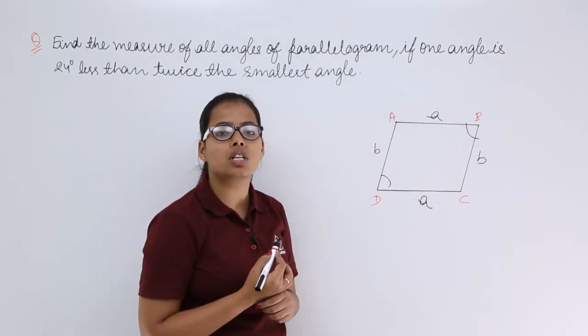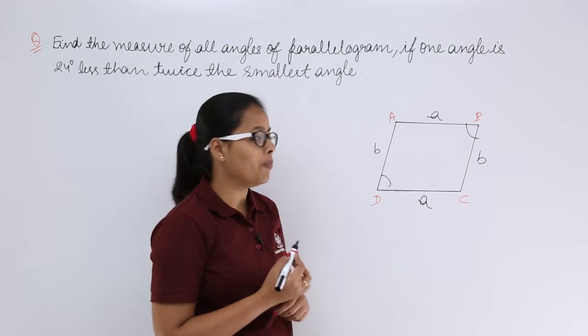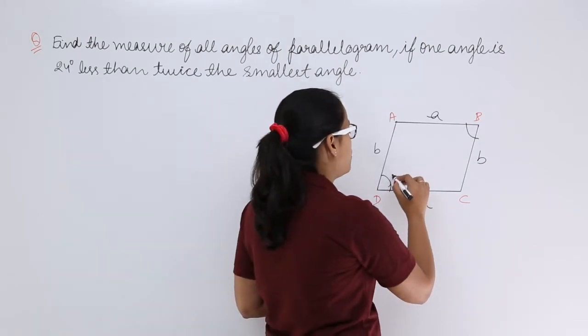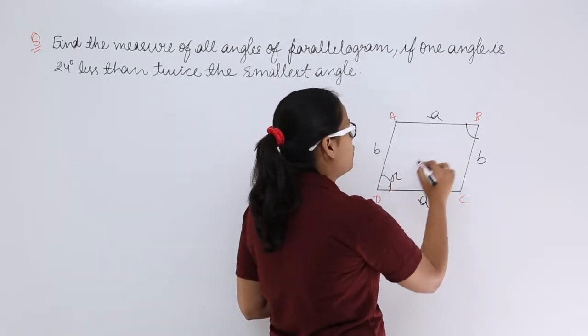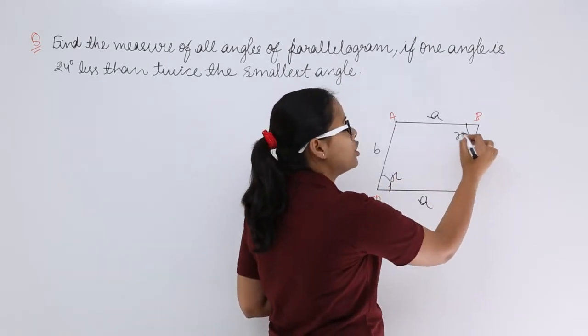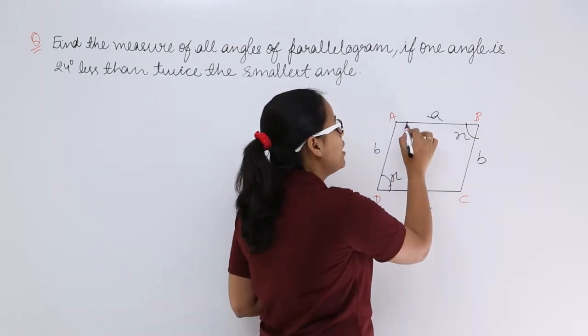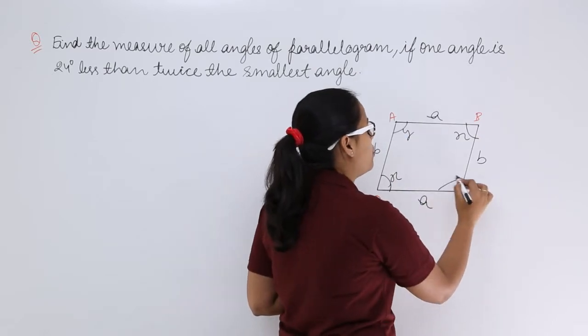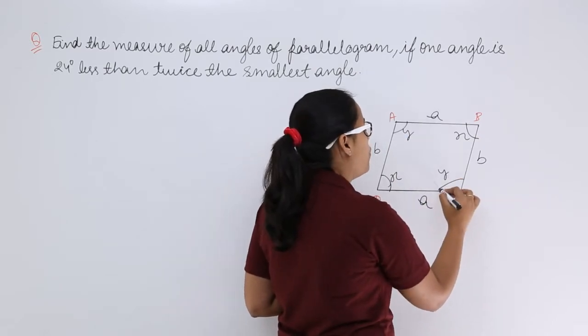Opposite angles are equal to each other. If this angle is x, then the opposite angle is also x. If this angle is y, then the opposite angle is also y.